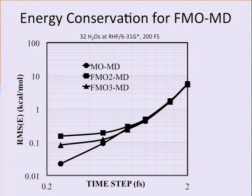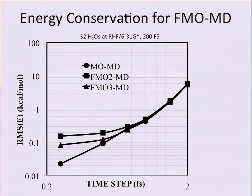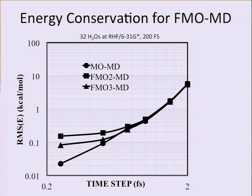Looking at a log-log graph of time step versus RMSD of the energy using the Verlet integrator — for an analytic gradient, with the Verlet integrator having order-two error, this should be a straight line with slope two. The full Hartree-Fock result gives a straight line as expected. But FMO2-MD and FMO3-MD don't get energy conservation. Classical MD people looked at me like I was crazy — having pieces of your gradient missing is totally fundamental; your ensemble doesn't generate correct statistics. People had published many FMO-MD applications, but they weren't valid because they weren't generating correct ensemble statistics. This went on for eight years.